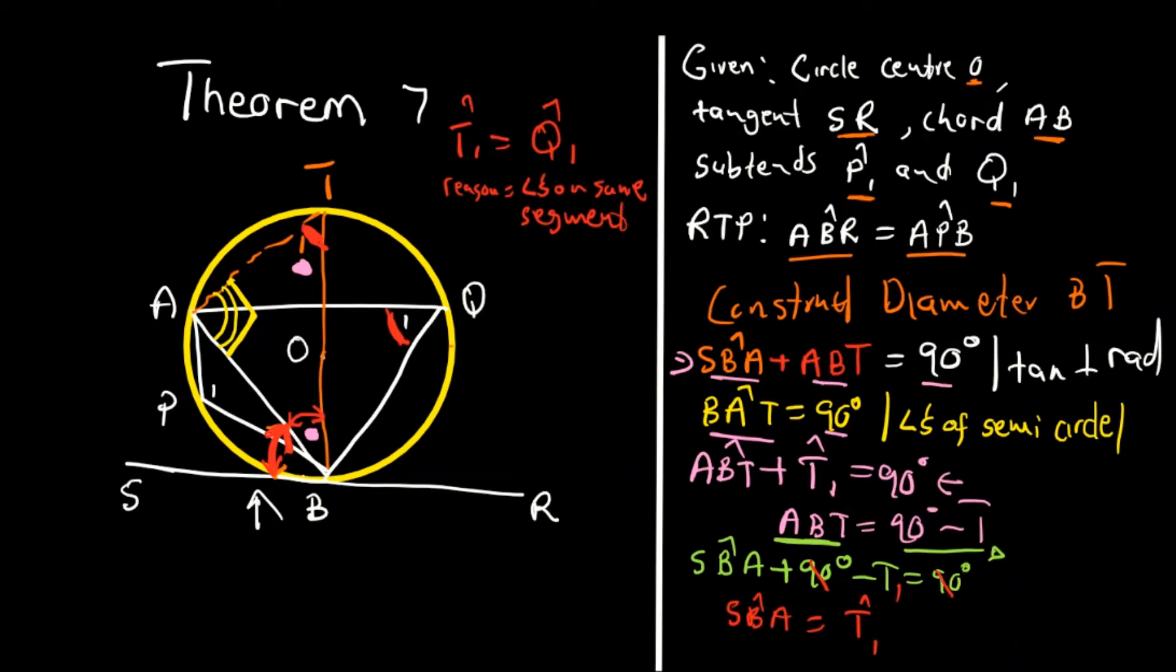Therefore, since T1 is equal to SBA, that concludes and says that Q1 is equal to SBA. So it makes this angle be equal to this angle here.